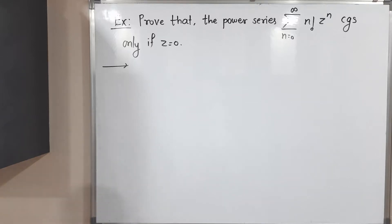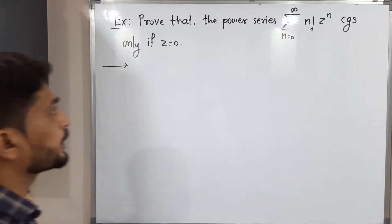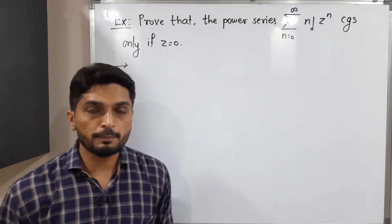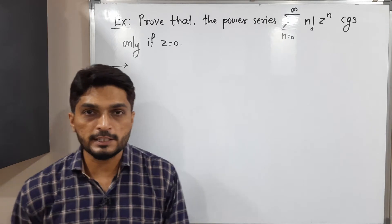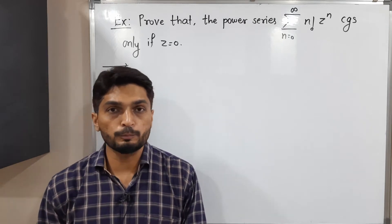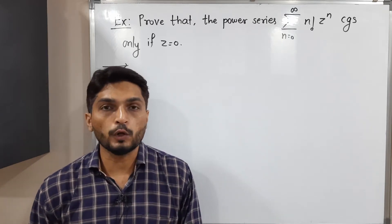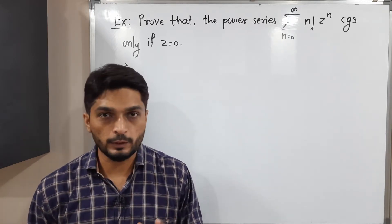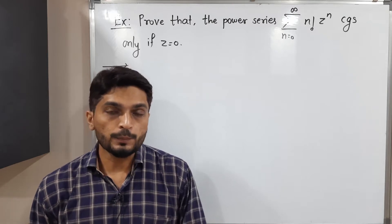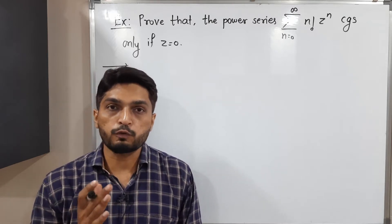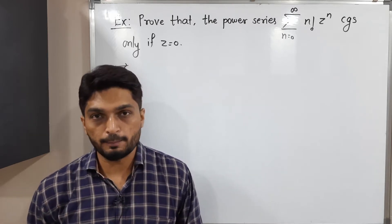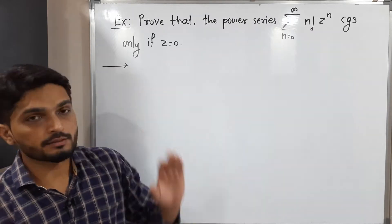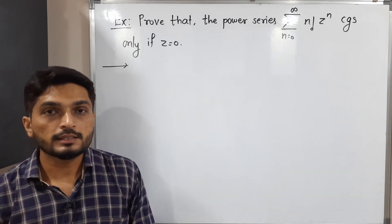Hi everyone, let us discuss this example. We have a power series and we have to prove that this power series is convergent only at Z equals zero. We are going to solve this using the radius of convergence.